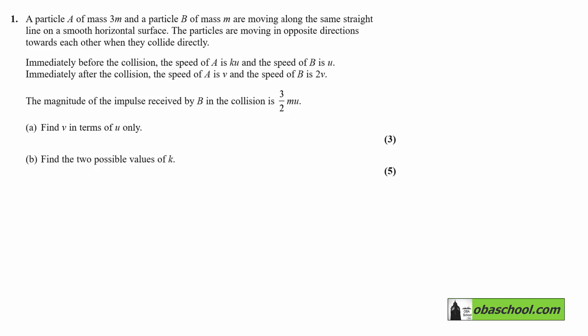A particle A of mass 3m and a particle B of mass m are moving along the same straight line on a smooth horizontal surface. The particles are moving in opposite directions towards each other when they collide directly. Immediately before the collision, the speed of A is Ku and the speed of B is U. Immediately after the collision, the speed of A is V and the speed of B is 2V.